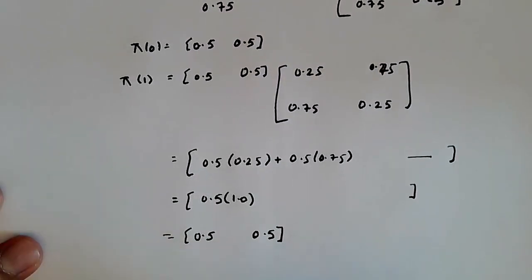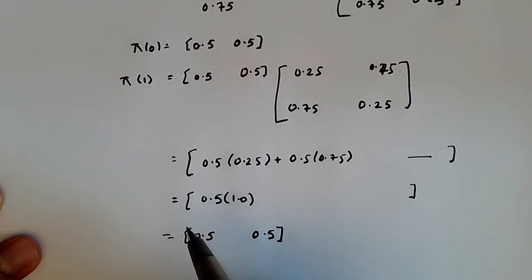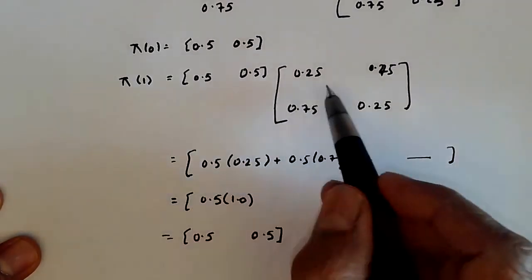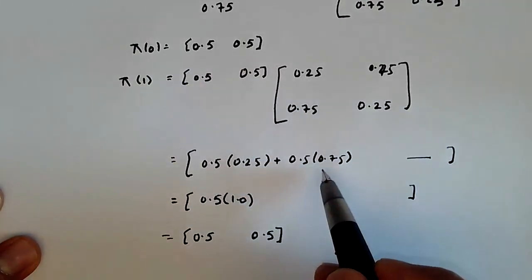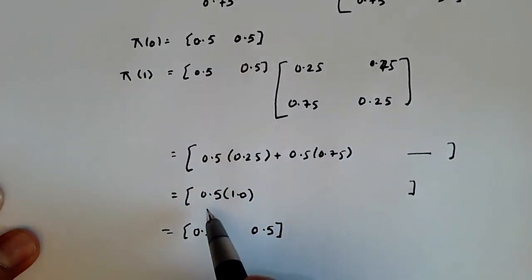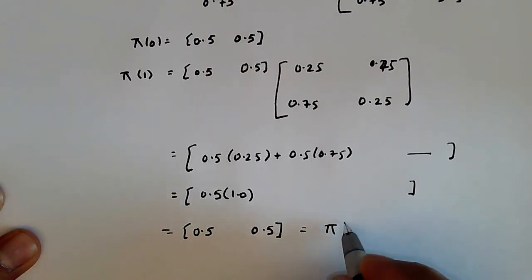So let me go over that again. So this times this is 0.5 times 0.25 plus 0.5 times 0.75, which is simplified to 0.5 times 1.0. And that gives us the matrix [0.5, 0.5], which of course is nothing more than π_0.